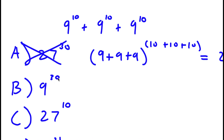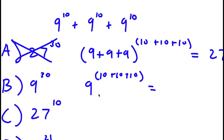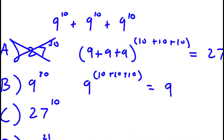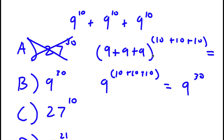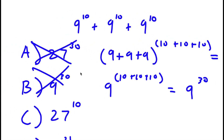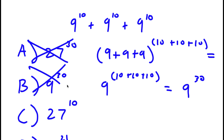For the second method to get answer choice B, you keep the base the same and simply add the exponents: 9 to the power of 10 plus 10 plus 10, which equals 9 to the power of 30. But this method is wrong as well — that's not the correct way of adding exponents.